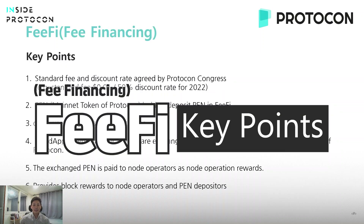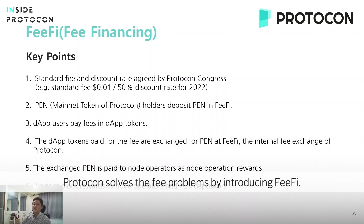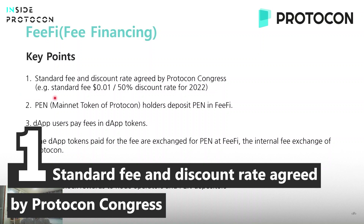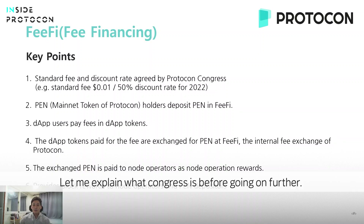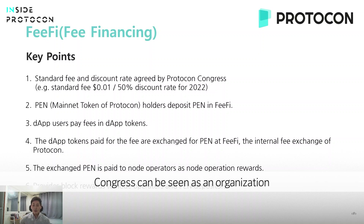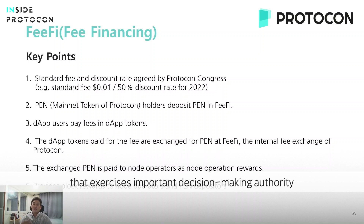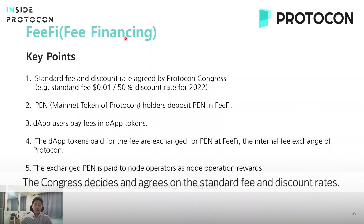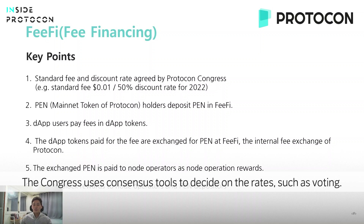Protocon solves the fee problem by introducing fee-fi. At the very beginning, the Protocon Congress decides on the sender fee rate and discount rate. Congress is a governing body under which pen token holders are the mainstay. Congress can be seen as an organization that exercises important decision-making authority related to Protocon governance, agreeing on the standard fees and discount rates.